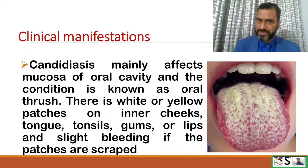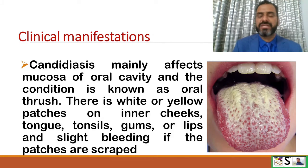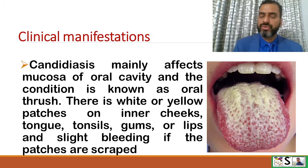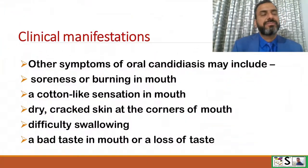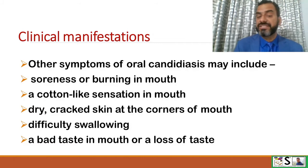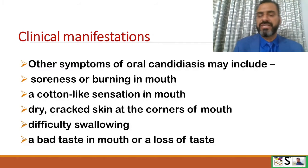What are the clinical manifestations of this disorder? Candidiasis mainly affects the mucosa of the oral cavity, and the condition is known as oral thrush. There are white or yellowish patches or a thick membrane on inner cheeks, tongue, tonsils, gums, or lips, with slight bleeding when the patch is removed. Other symptoms may include soreness or burning in the mouth, a cotton-like sensation, dry cracked skin at the corners of the mouth, difficulty in swallowing, and a bad taste or loss of taste.